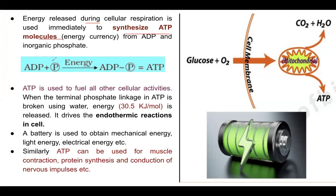The energy released during cellular respiration is used for ATP synthesis from ADP plus inorganic phosphate. ADP stands for adenosine diphosphate. When a phosphate group is added to ADP using the energy released in the presence of oxygen, it becomes ATP — adenosine triphosphate — which has three phosphate groups.